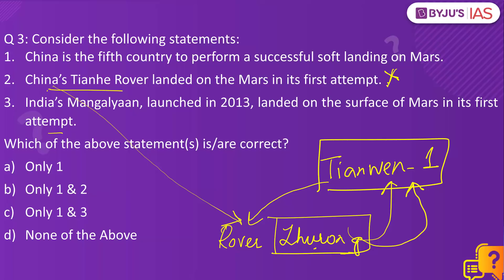China is not the fifth country to perform a successful soft landing on Mars — China is the third country. The only three countries are Soviet Union, United States, and China. The Soviet Union's Mars mission landed on the surface but contact was lost in about 20 seconds, so it was only partially successful. The United States mission was fully successful, and now China is the third country to perform a successful soft landing on Mars. So statement one is also incorrect.